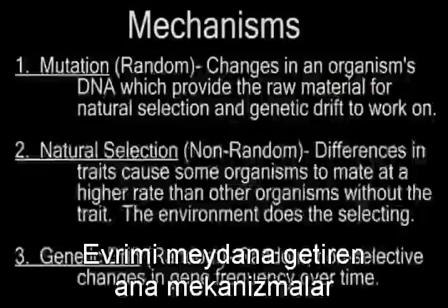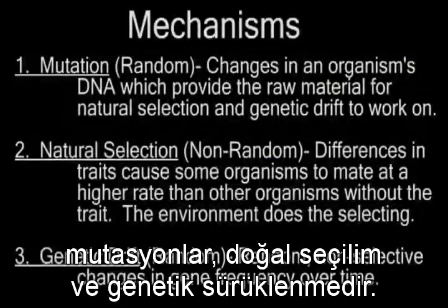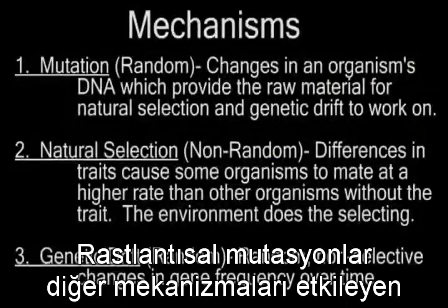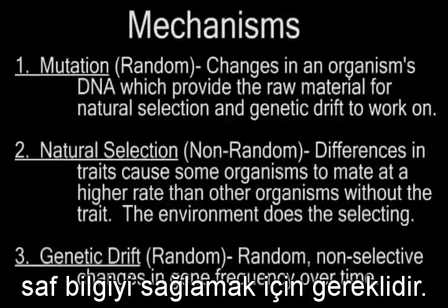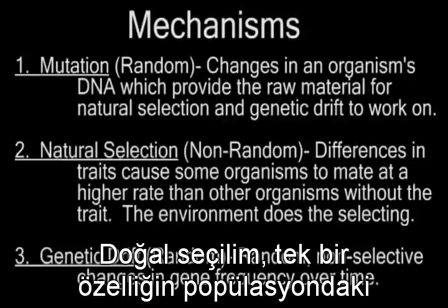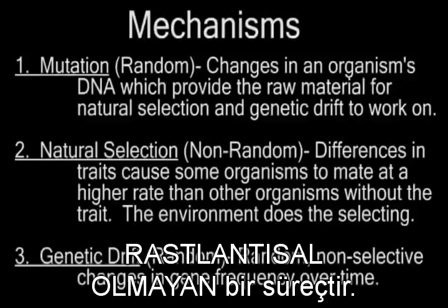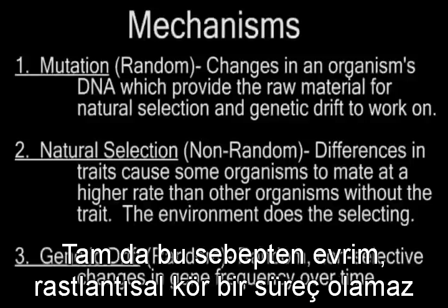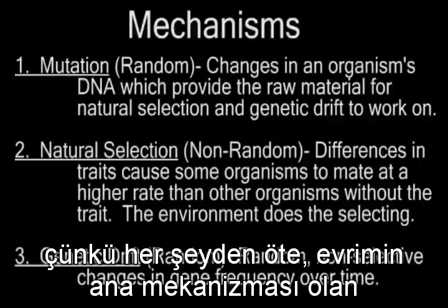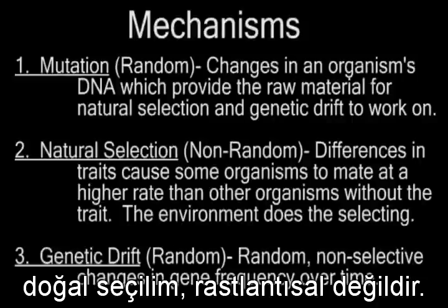The main mechanisms driving evolution are mutations, natural selection, and genetic drift. Random mutations provide the raw information necessary for the other mechanisms to work upon. Natural selection is, by definition, a non-random process, whereby the environment favors one trait leading to its accumulation in the population. It is precisely for this reason that evolution is not a blind random process, because one of its main mechanisms is, by definition, non-random.